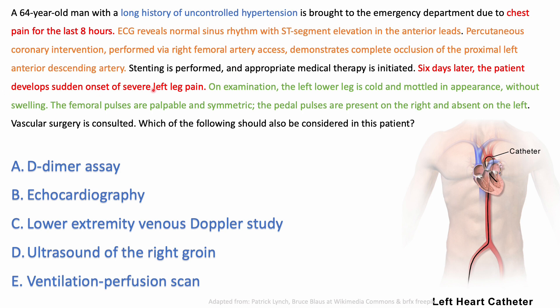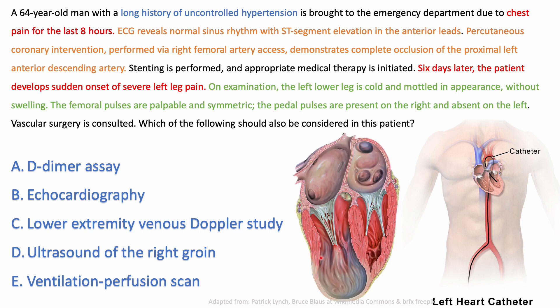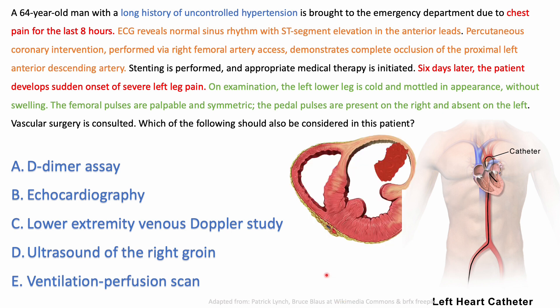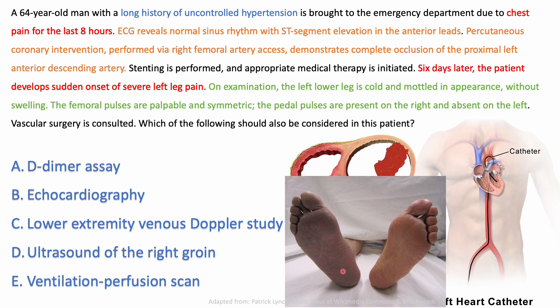Six days later, the patient develops sudden onset of severe left leg pain. Post-MI, why would someone develop leg ischemia with absent pulses? This is a complication of myocardial infarction: the infarcted chamber becomes weak and non-contractile, causing blood stasis — a risk factor for thrombosis. A mural thrombus forms on the infarcted wall and can send emboli to the lower limb, making it cold and mottled.